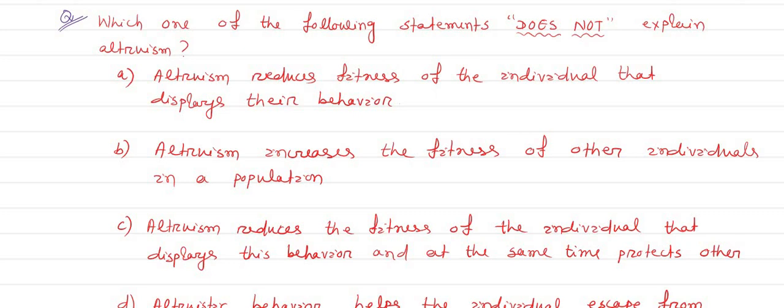Here is the next question. The question is which one of the following statements does not explain altruism. The question is asking about altruism behavior. Altruism behavior of an organism is that it protects other organisms in the population and at the same time it risks itself or its life by protecting others.